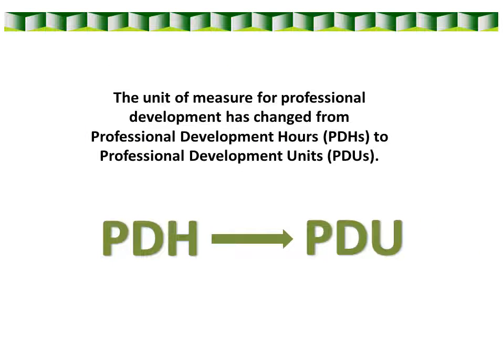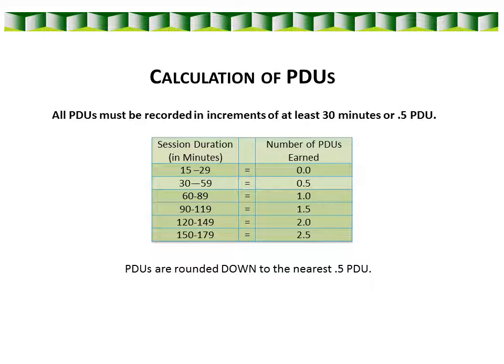Because we have new activity types that are not based on clock hours, the unit of measure for professional development has changed from professional development hours or PDHs to professional development units or PDUs. Different activity types earn a different corresponding number of PDUs. It's important to note that PDUs can only be earned in half-hour increments and they're rounded down to the nearest half-hour. 0.5 PDU is the smallest possible increment.